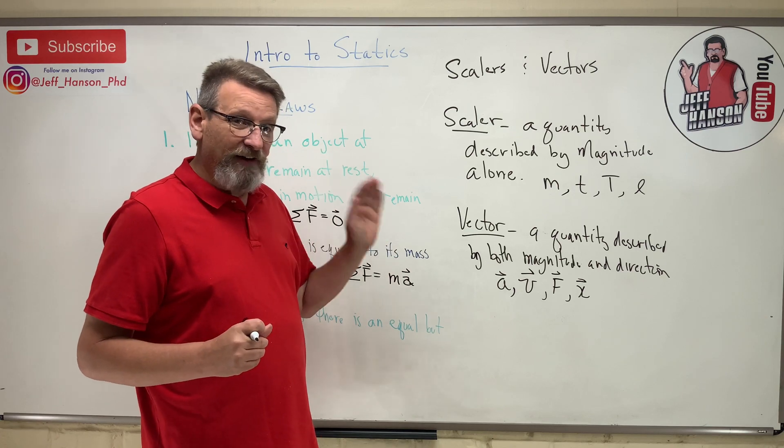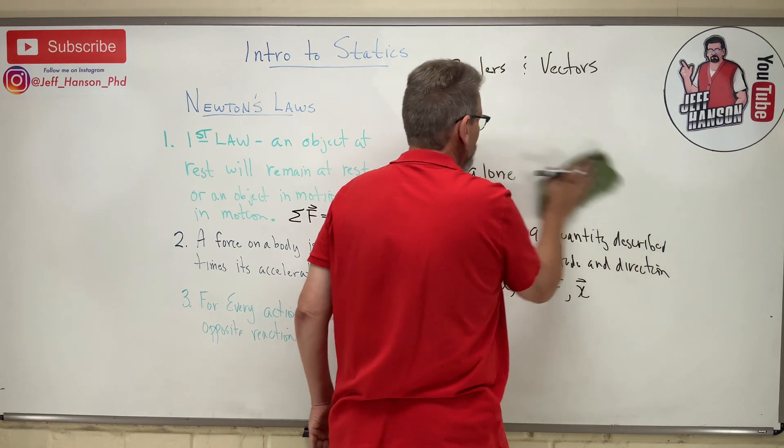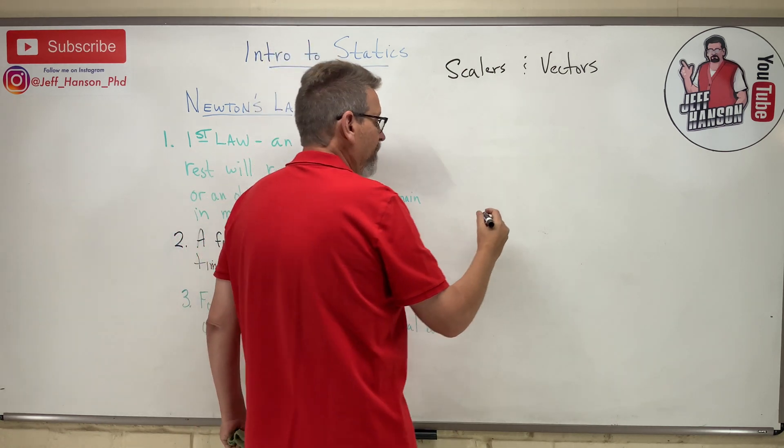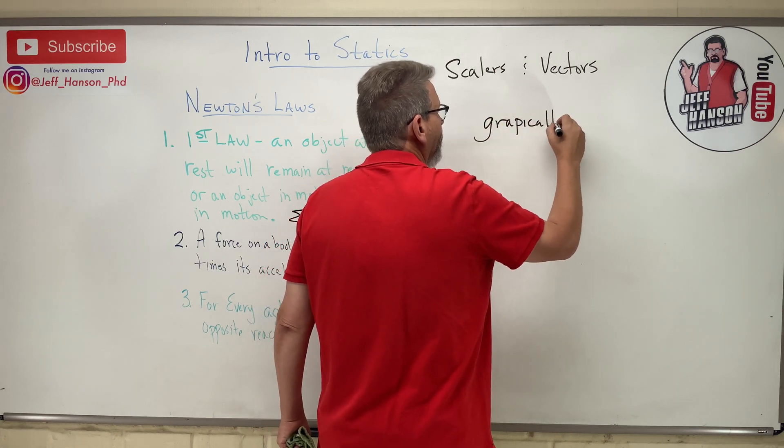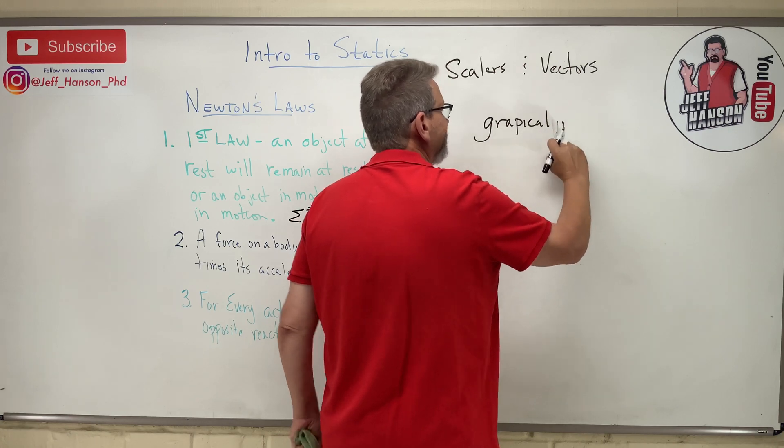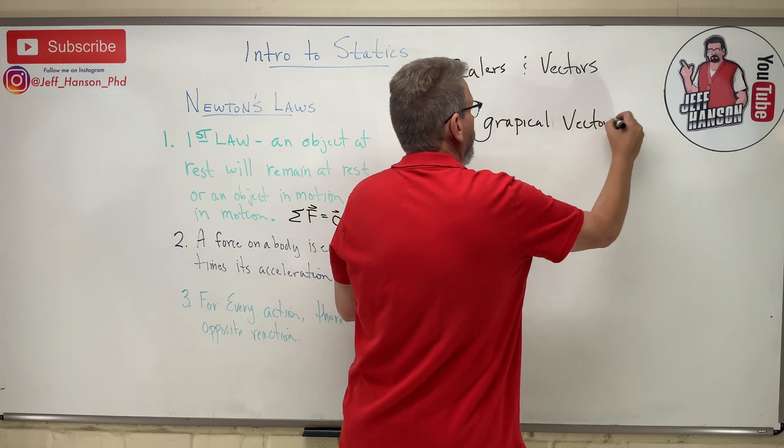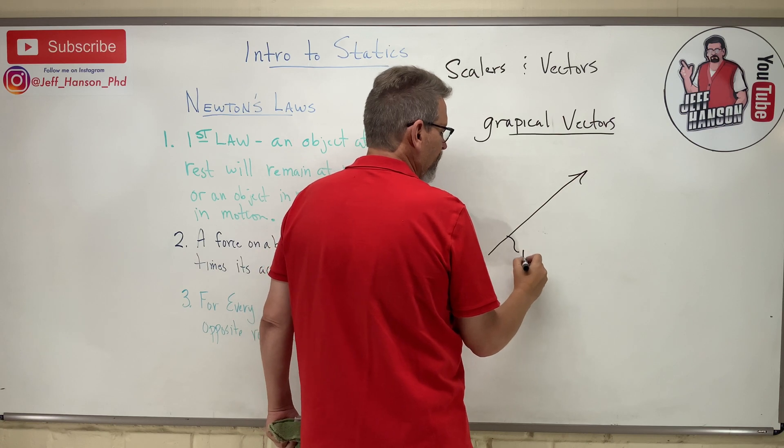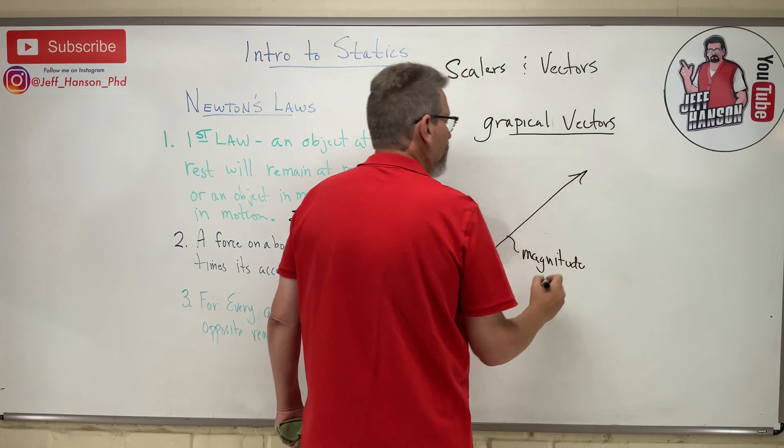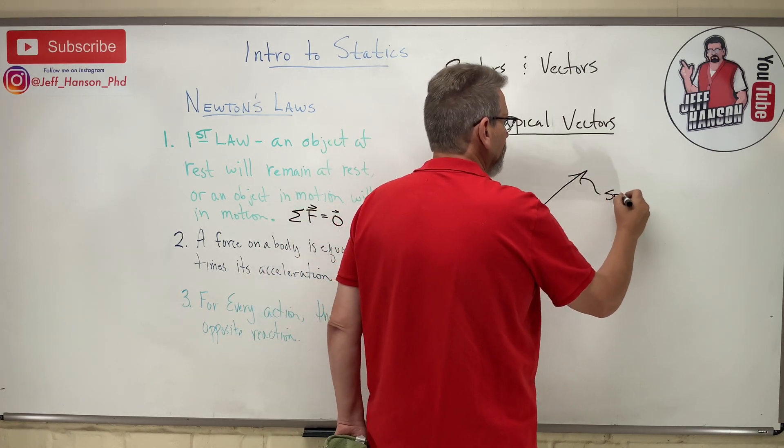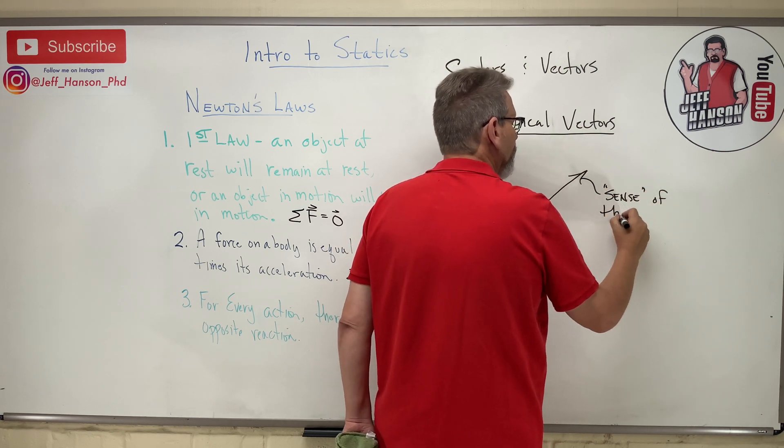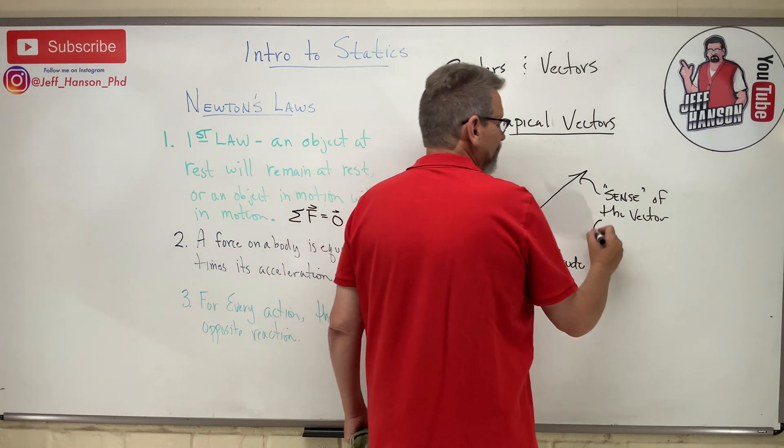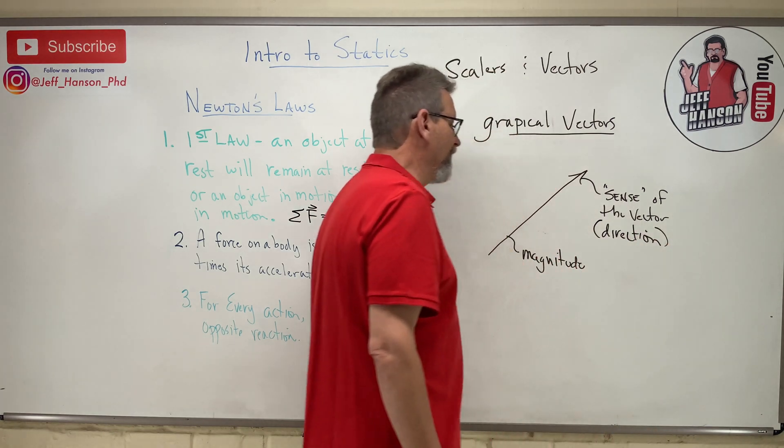And then lastly, I want to talk to you about vectors graphically. Sometimes we can draw vectors graphically. Like if we're out in the field and all we had was a ruler and a protractor, we can add vectors together if we draw them right. Here is how you draw a vector. The body of the vector represents the magnitude, the how big it is. And the tip or the arrow here represents the sense of the vector. Now sense, that doesn't make any sense. It's just another word for direction. The direction of the vector.